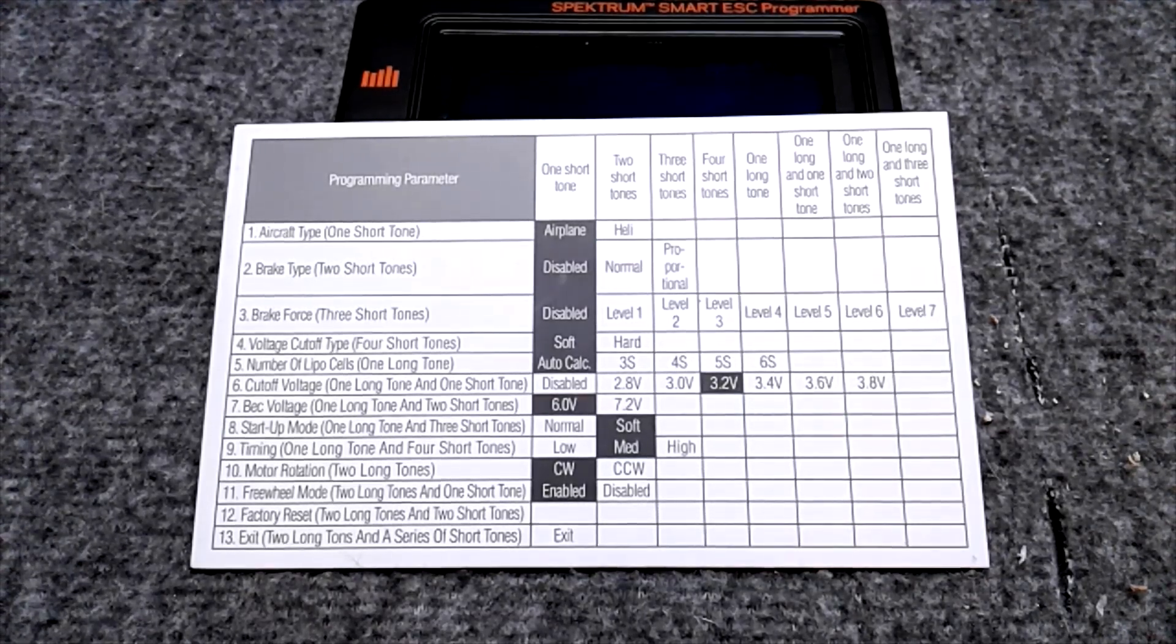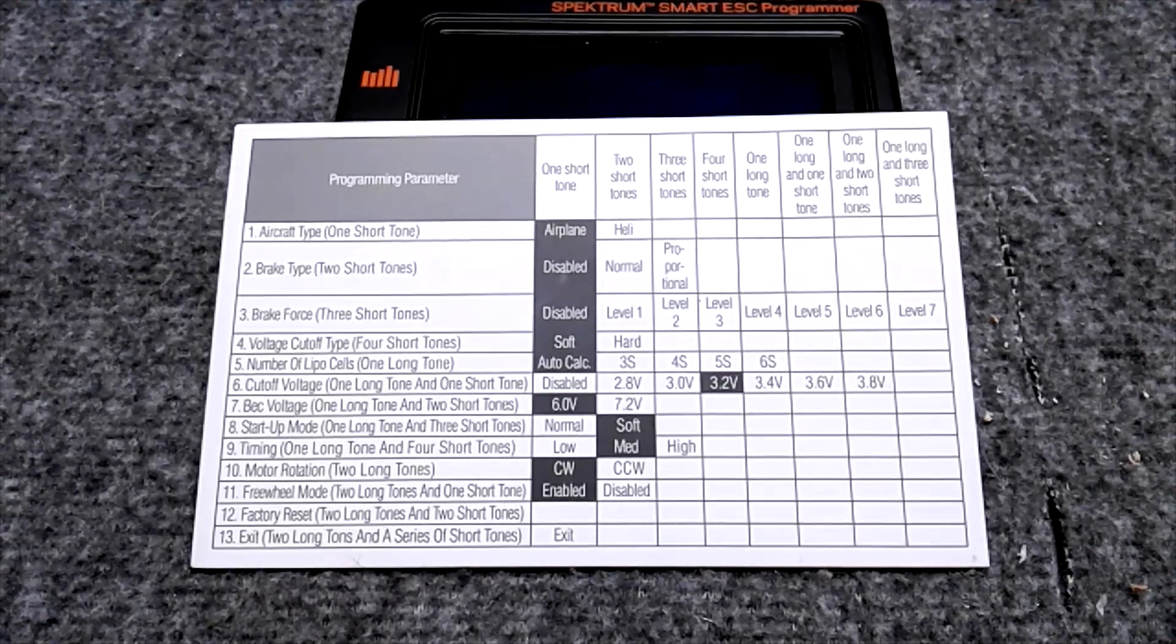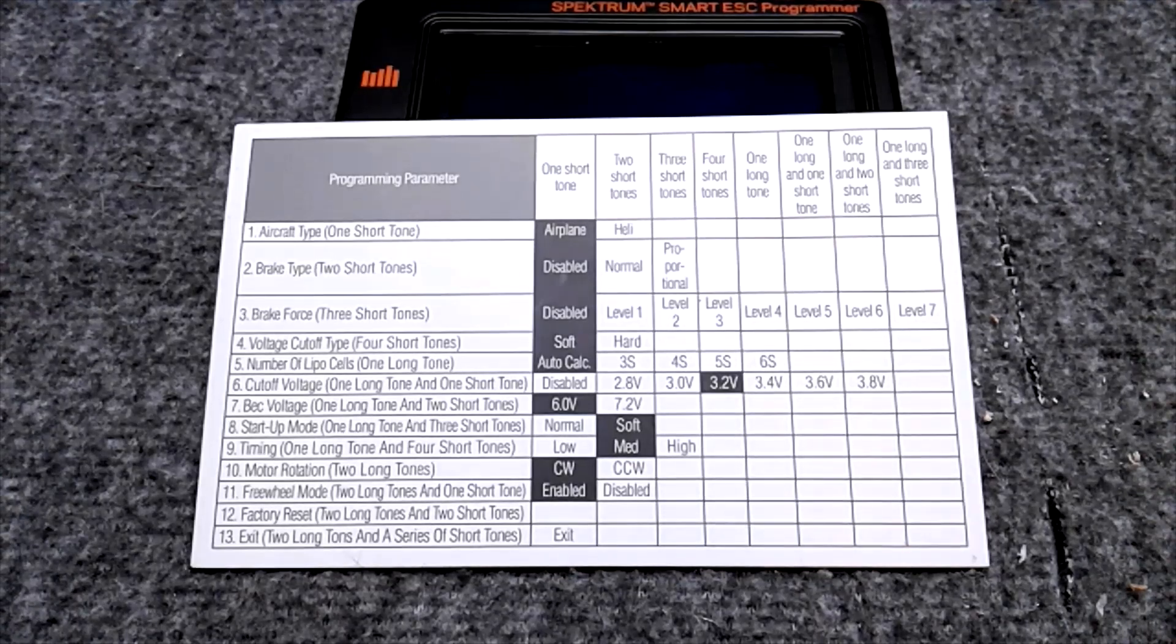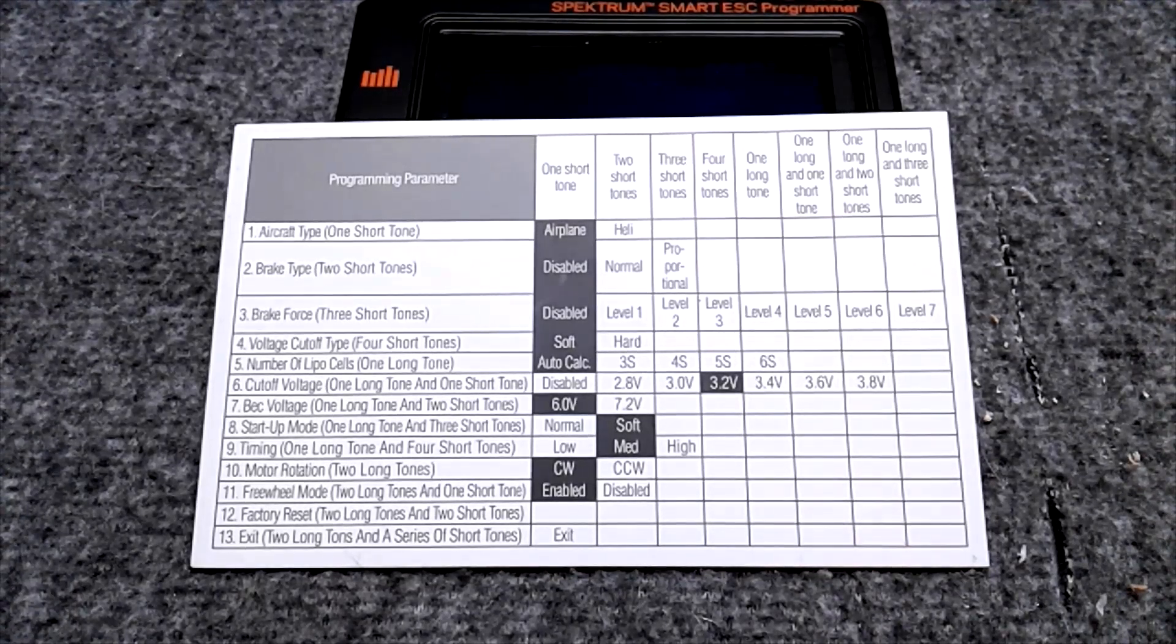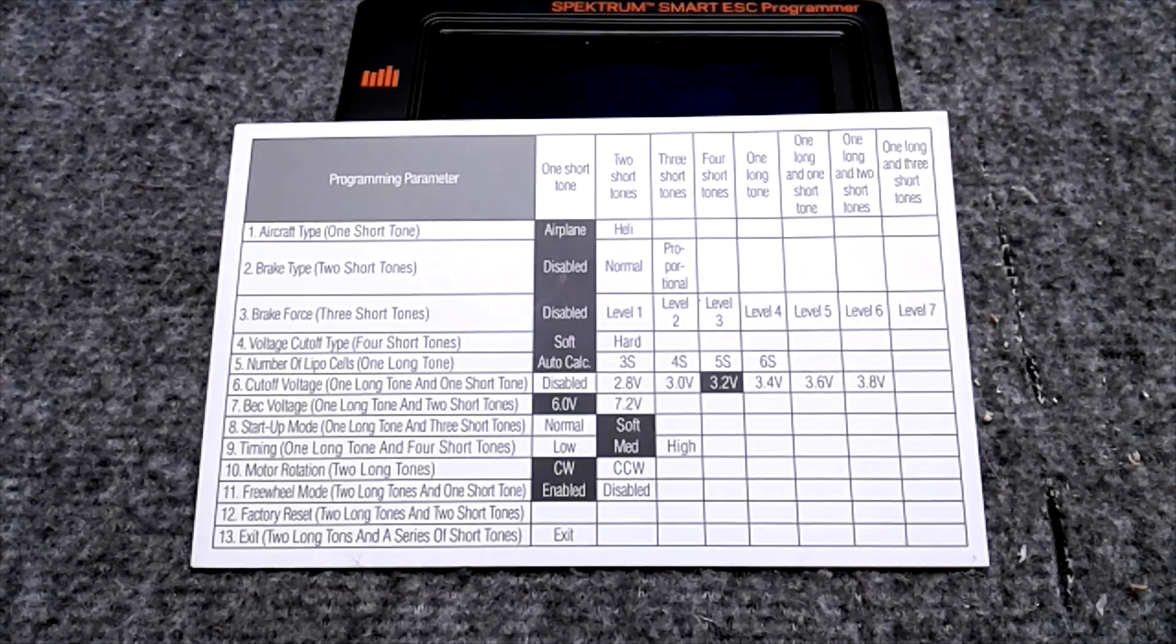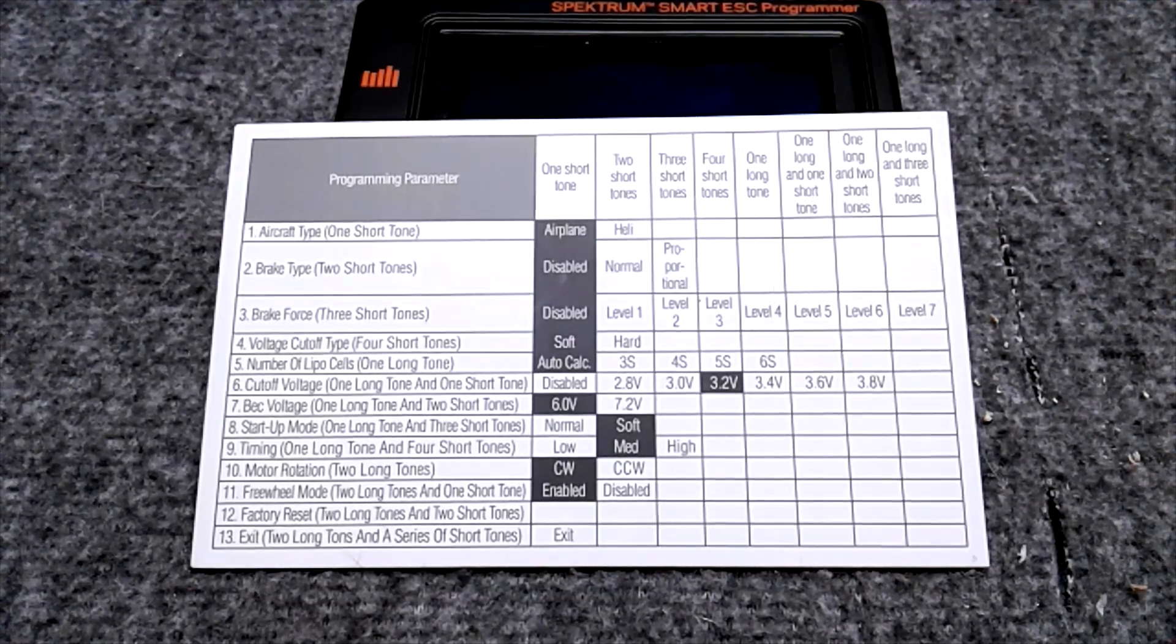Our choices are on the left. And once we select that we want to change that choice, then over to the right is the options. Before I plug it up, the first parameter to change is your aircraft type. When you hear one beep, you move the transmitter stick and that tells it that you want to change the aircraft type. If you want airplane, you will wait until you hear one tone. If you want helicopter, you'll wait for two tones. And then you move the stick accordingly. But I'm just going to do it and talk through it.